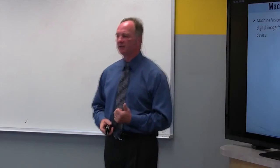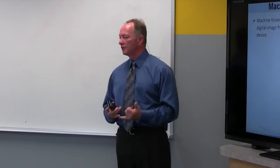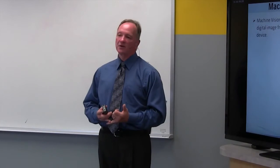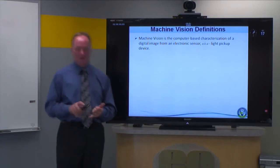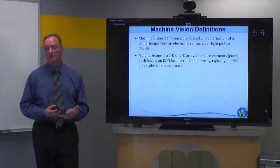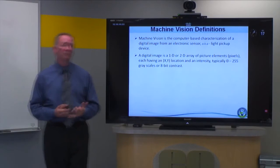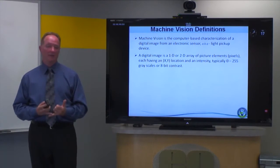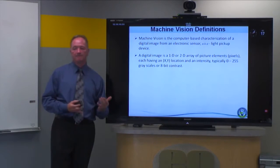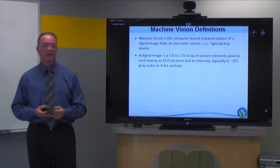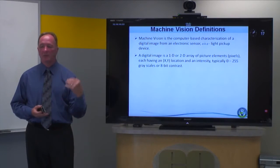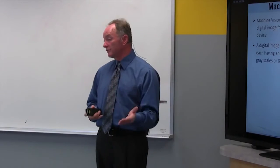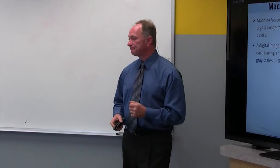A few definitions: machine vision is the computer-based characterization of an image from a sensor or pickup device. A digital image is really a 1D or 2D array of pixel elements — pixels each have an X and Y location and an intensity from 0 to 255, which is an 8-bit contrast. Color cameras produce 3×8-bit or more, or 3×12-bit or more contrast as well.